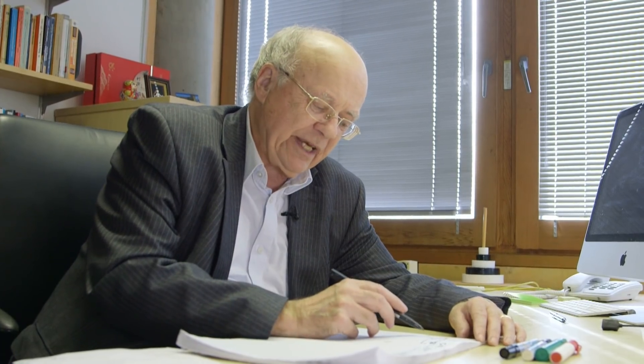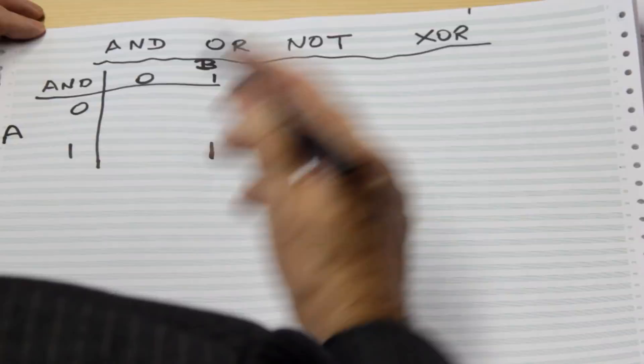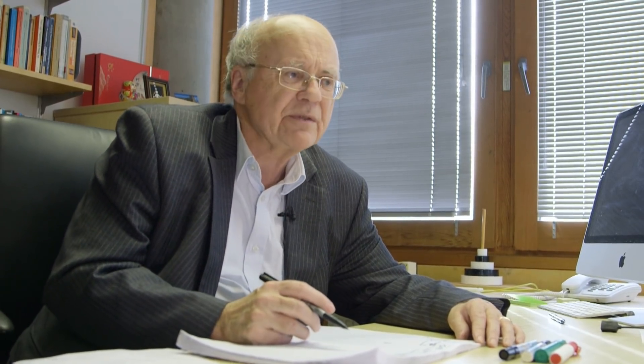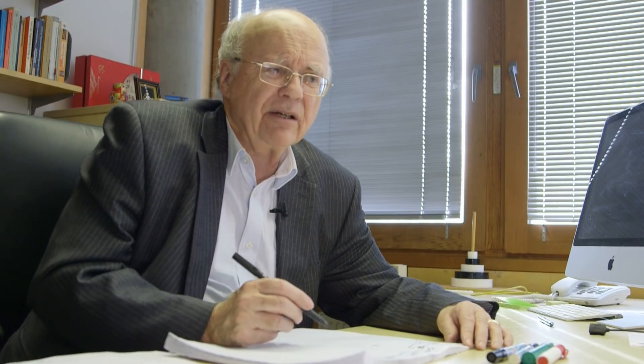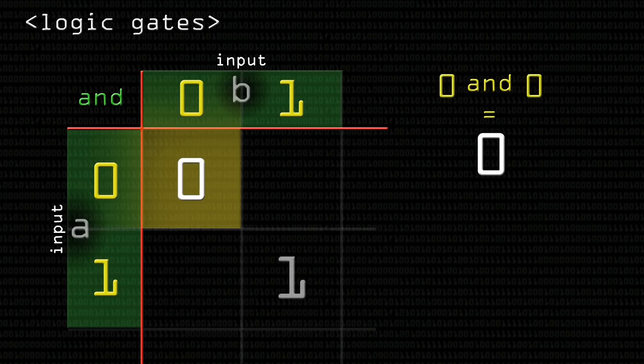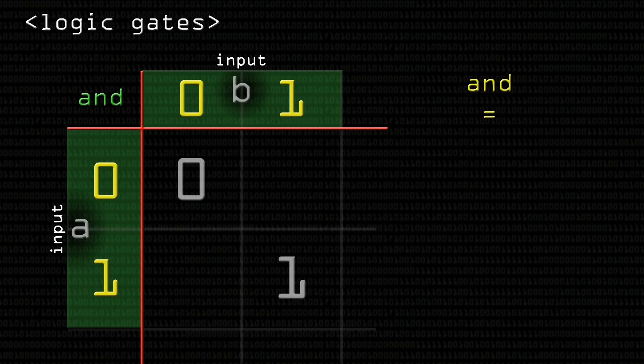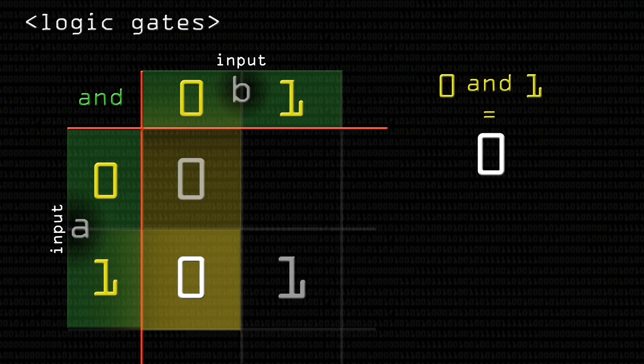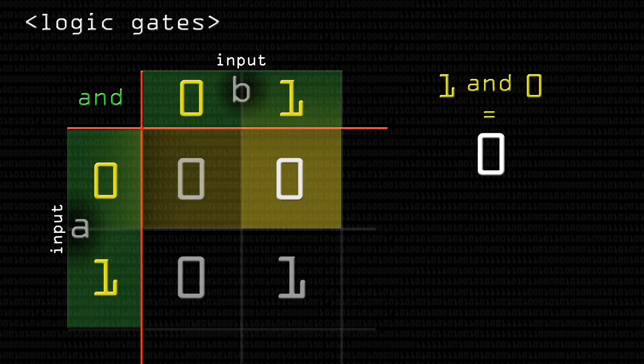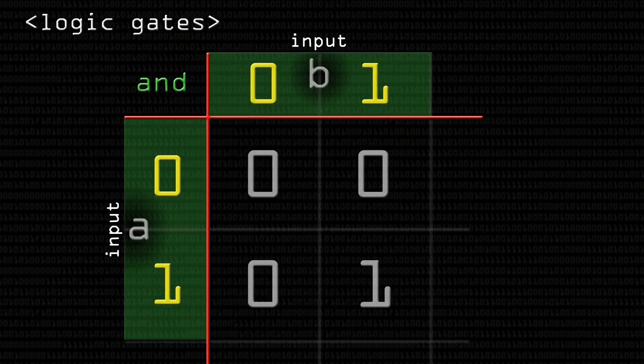But if you take 0 and 0, given that 0 means false, then the AND can't be true because you're saying it's false and it's false. So the outcome is false, it's a 0. And equally, if one of them is true and one of them is false, the outcome still is false. Because the outcome of an AND gate, for it to be true, both of them have got to be true. So you end up with a result matrix here with three 0's in it and only one 1.